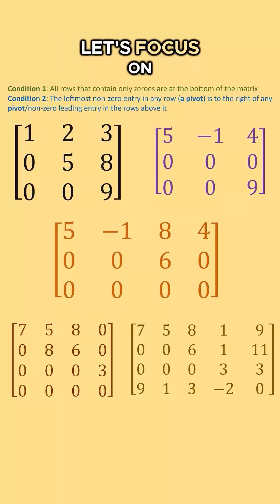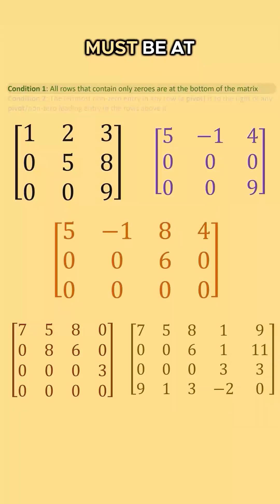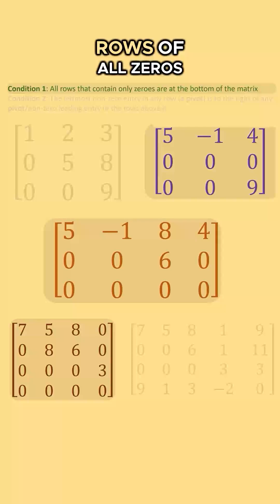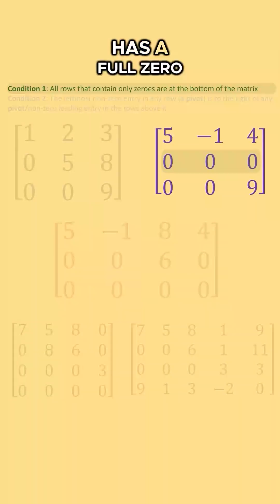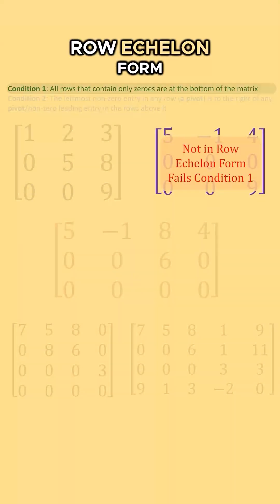First, let's focus on our first condition again. All four zero rows must be at the bottom of the matrix. These three matrices have rows of all zeros. Are any of these rows not at the bottom of the matrix? Well, the matrix in the top right corner has a full zero row above a non-zero row, and so it is not in row echelon form.